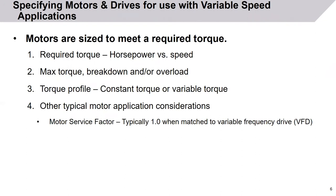To specify motors and drives for use with variable speed applications, first let's talk about motors. Motors are sized to meet a required torque — how much is needed to drive a load — which is a function of horsepower versus speed. You also need to know the max torque, also known as breakdown torque and/or overload capabilities, and the torque profile of the load — whether it will be constant torque or variable torque. One key fact: typically motor service factor is 1.0 when matched to a variable frequency drive.